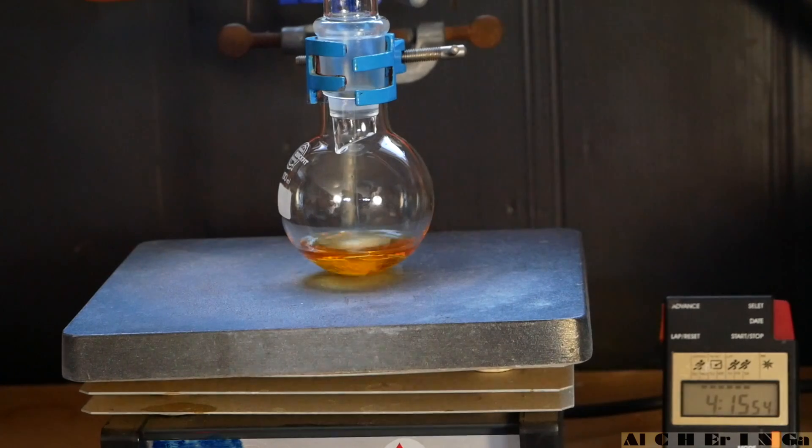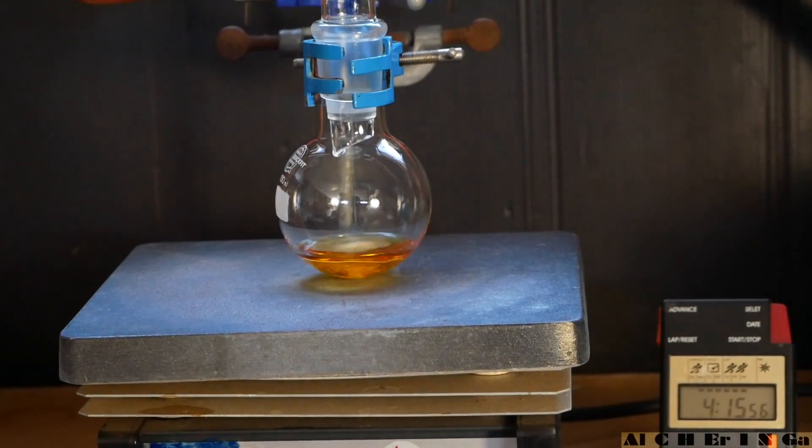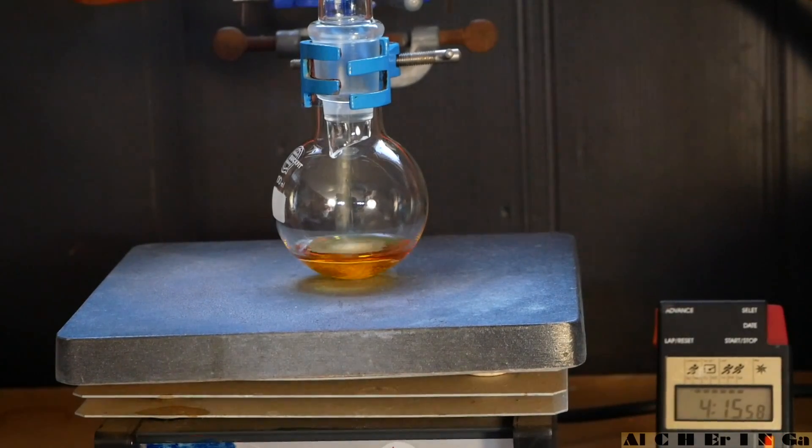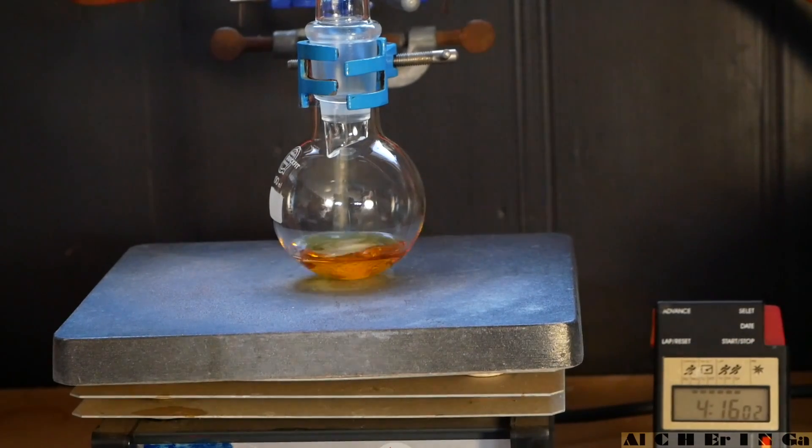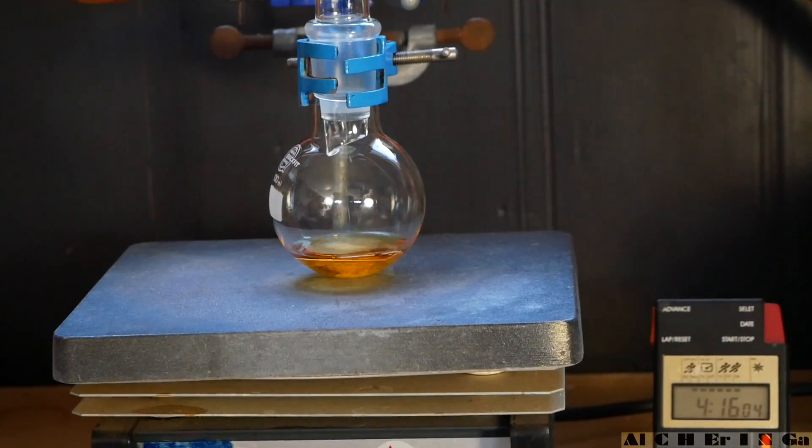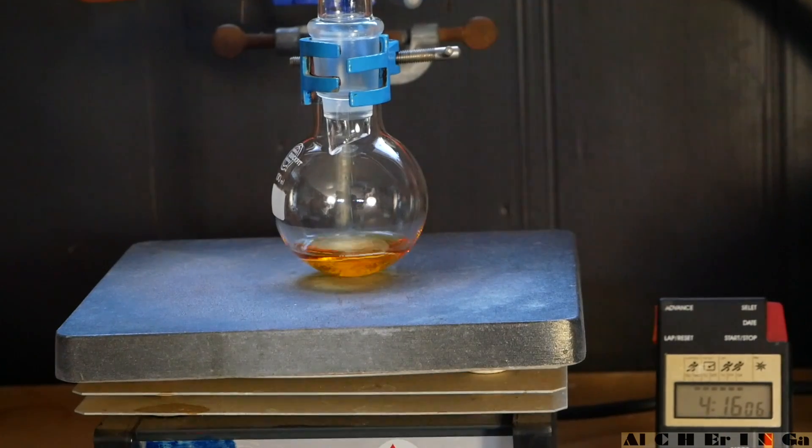Welcome Alchemist viewers. In this video, I will be synthesizing 1-Phenyl-2-Nitropropene from benzaldehyde and nitroethane. Similar to the previous video, this reaction is called the Henry reaction or the nitroaldol reaction.